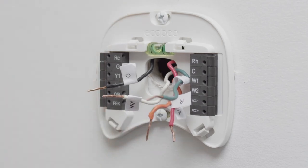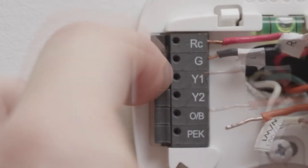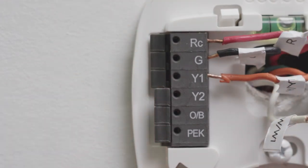Using the labels as a guide, connect the wires to the designated terminals on your new thermostat backplate. For example, insert the wire labeled G into the G terminal. If you're having a hard time inserting the wires, push down on the levers at the sides of the terminal blocks.